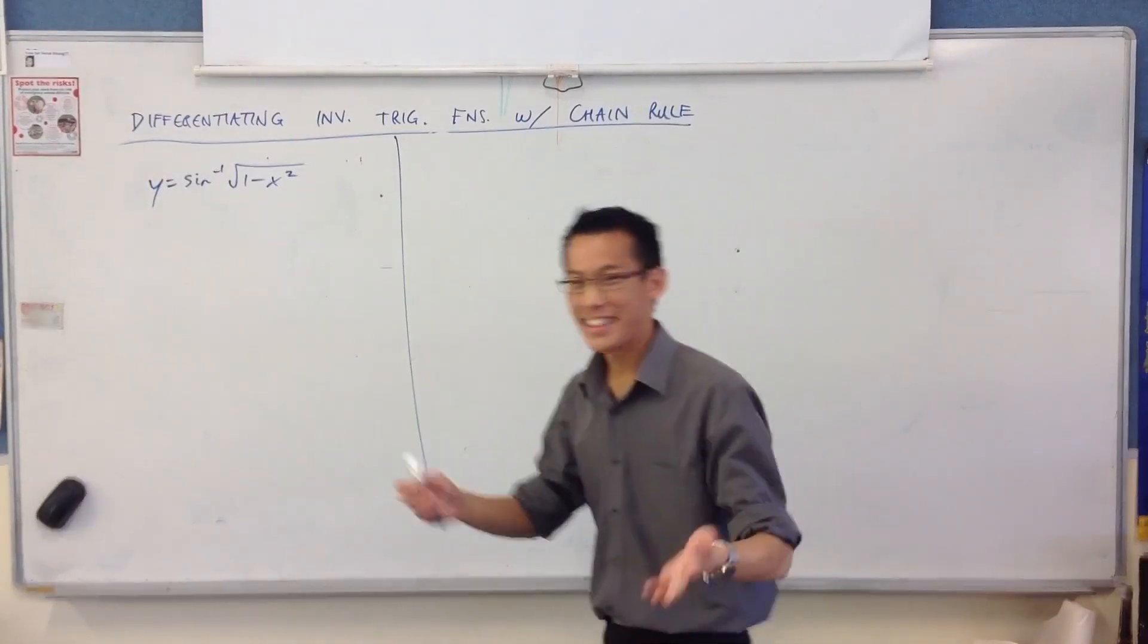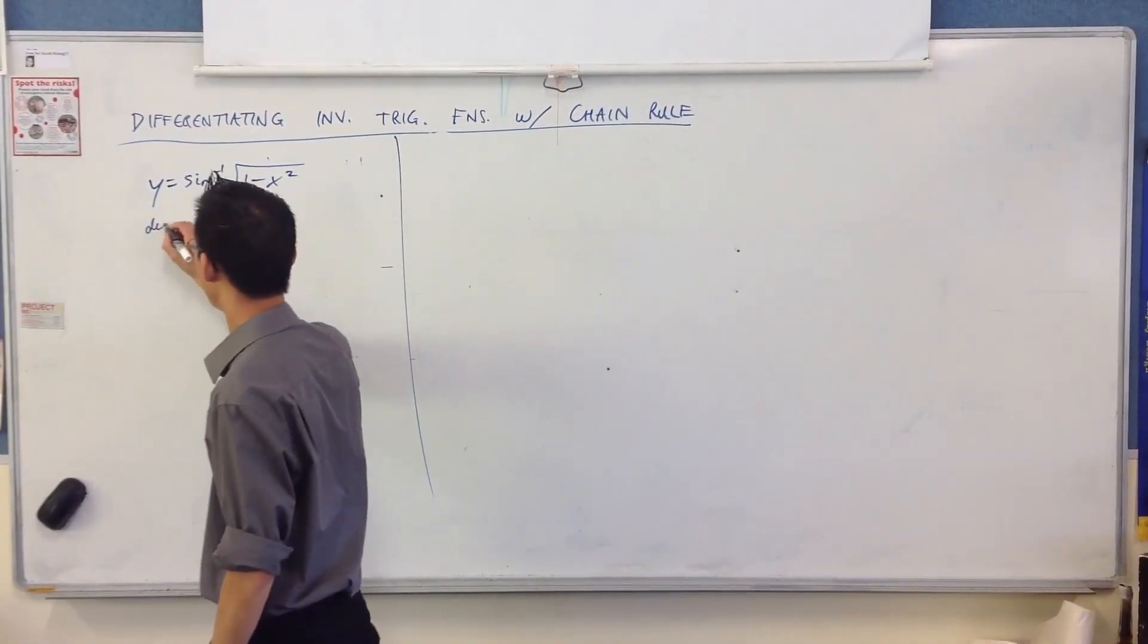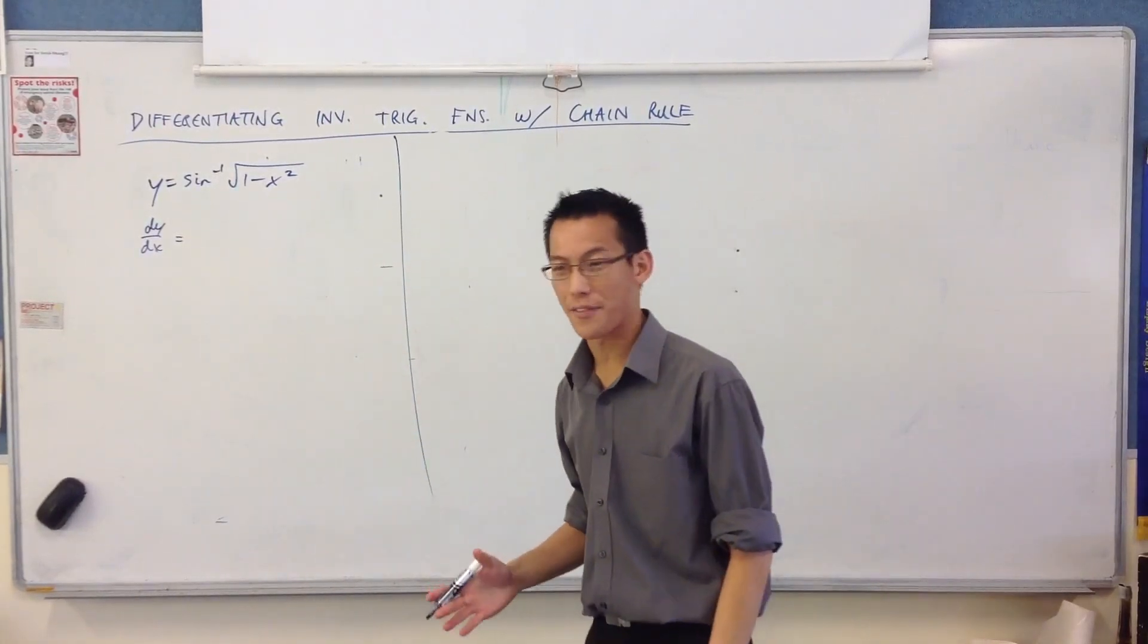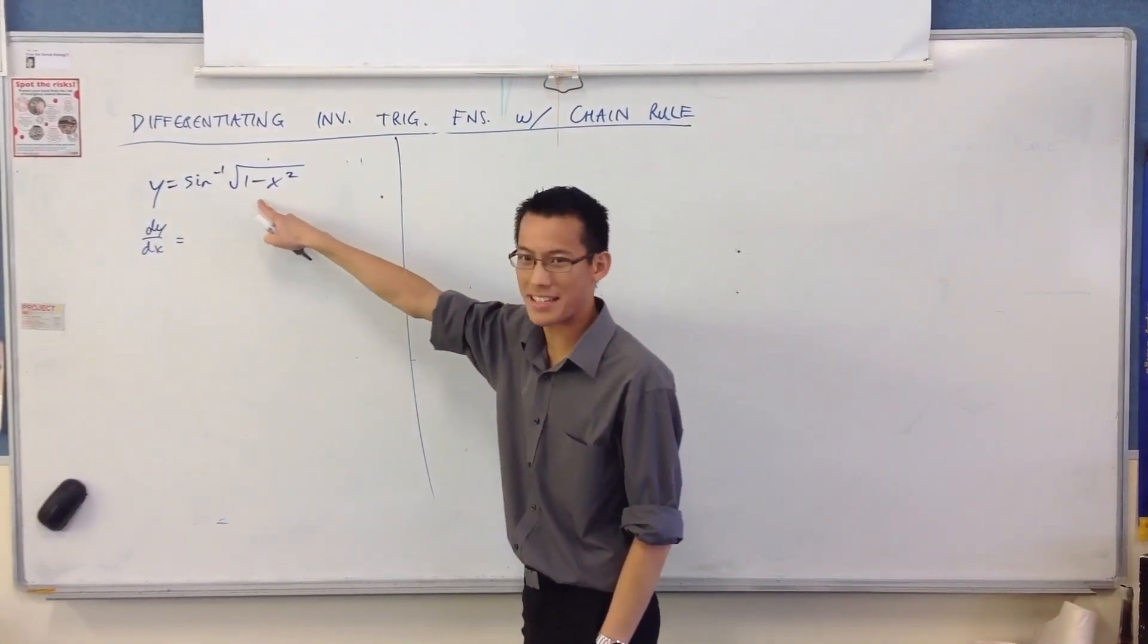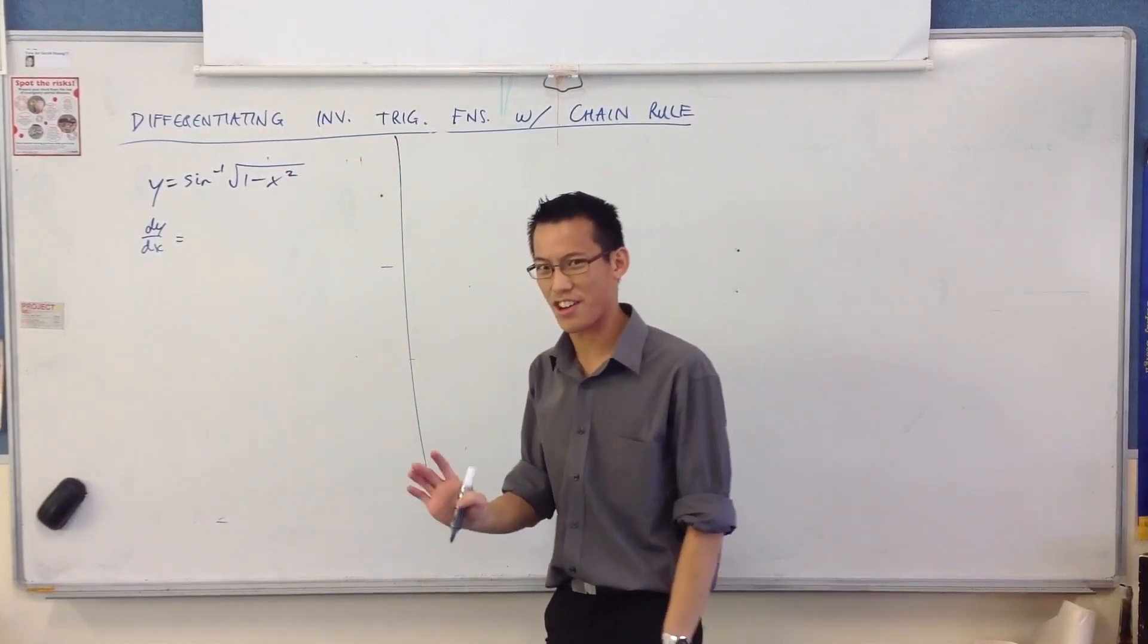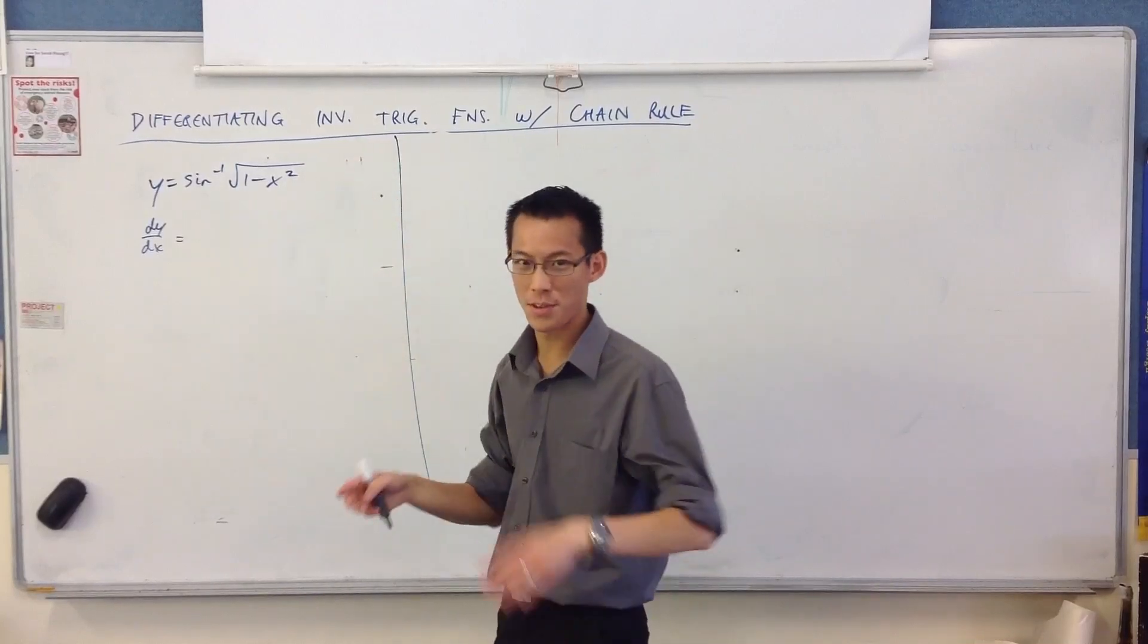Okay, you ready? Let's work out the derivative. Okay, so let's do the inside first. Now that is a bit messy, that's 1 minus x squared to the power of a half. Okay, so let's give it a go. 1 minus x squared to the power of half. Let's do this.